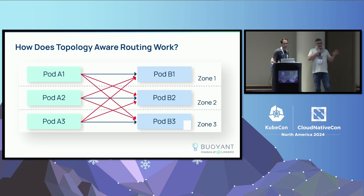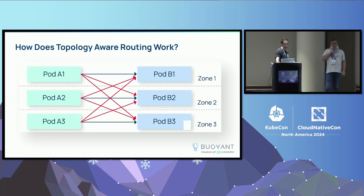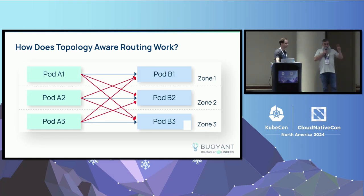Our application has three orders deployments — one in each zone — and three warehouse services, one in each zone, three replicas each. So we've got nine total clients and nine total endpoints for the service. Without topology-aware routing, everything talks to everything. For each client, a third of requests stay in zone and two-thirds go out of zone — so two-thirds of your traffic is costing you money.